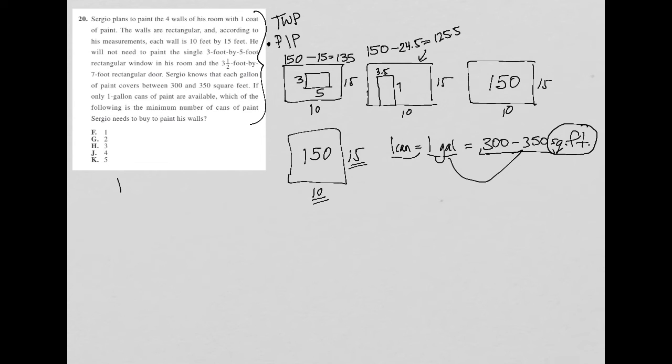So all together, I have 135 square feet on one wall, 125.5 square feet on another wall. And then I have two walls that are both 150 square feet. So when I add all that together, what I get here is 560.5 square feet.